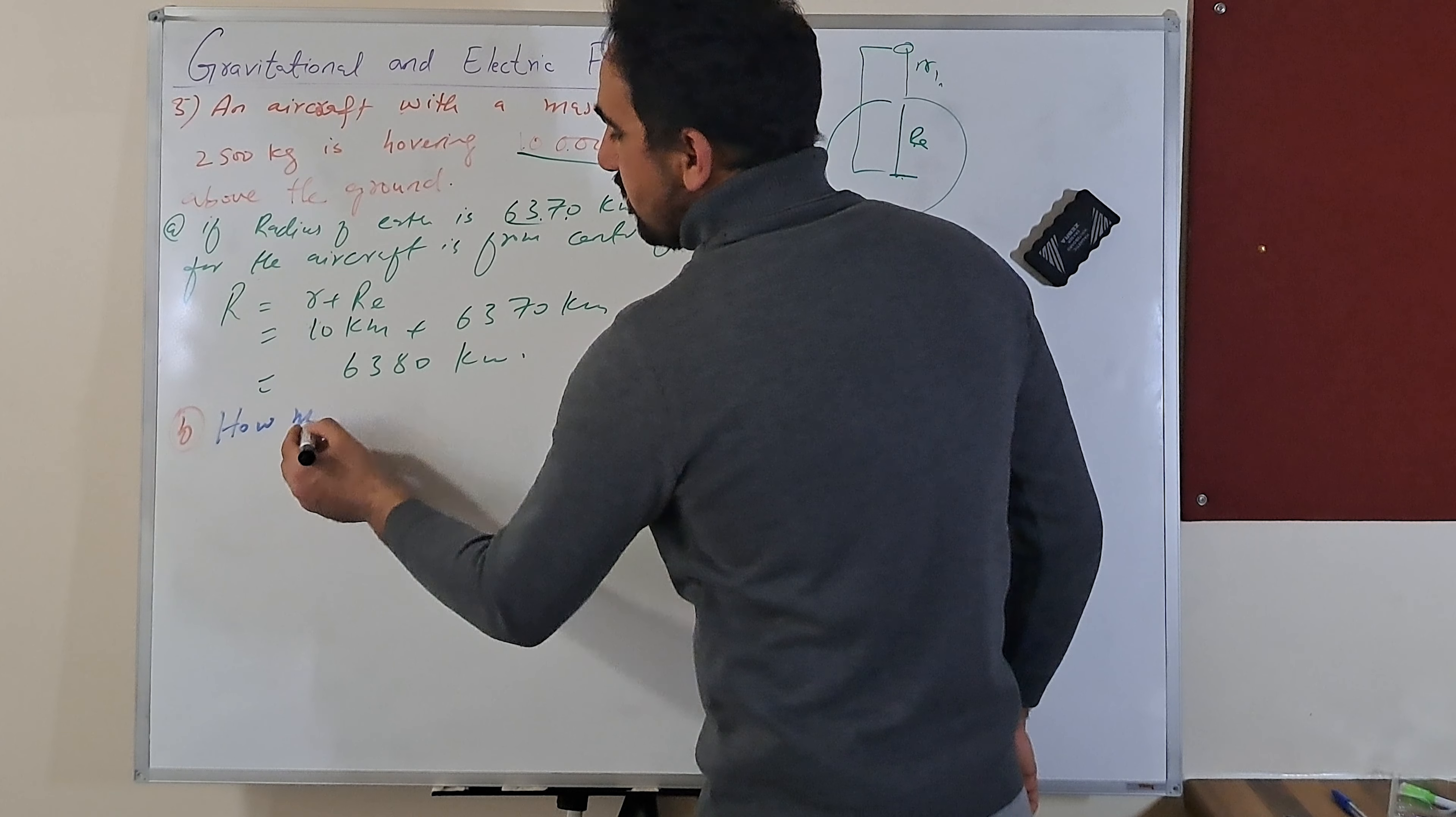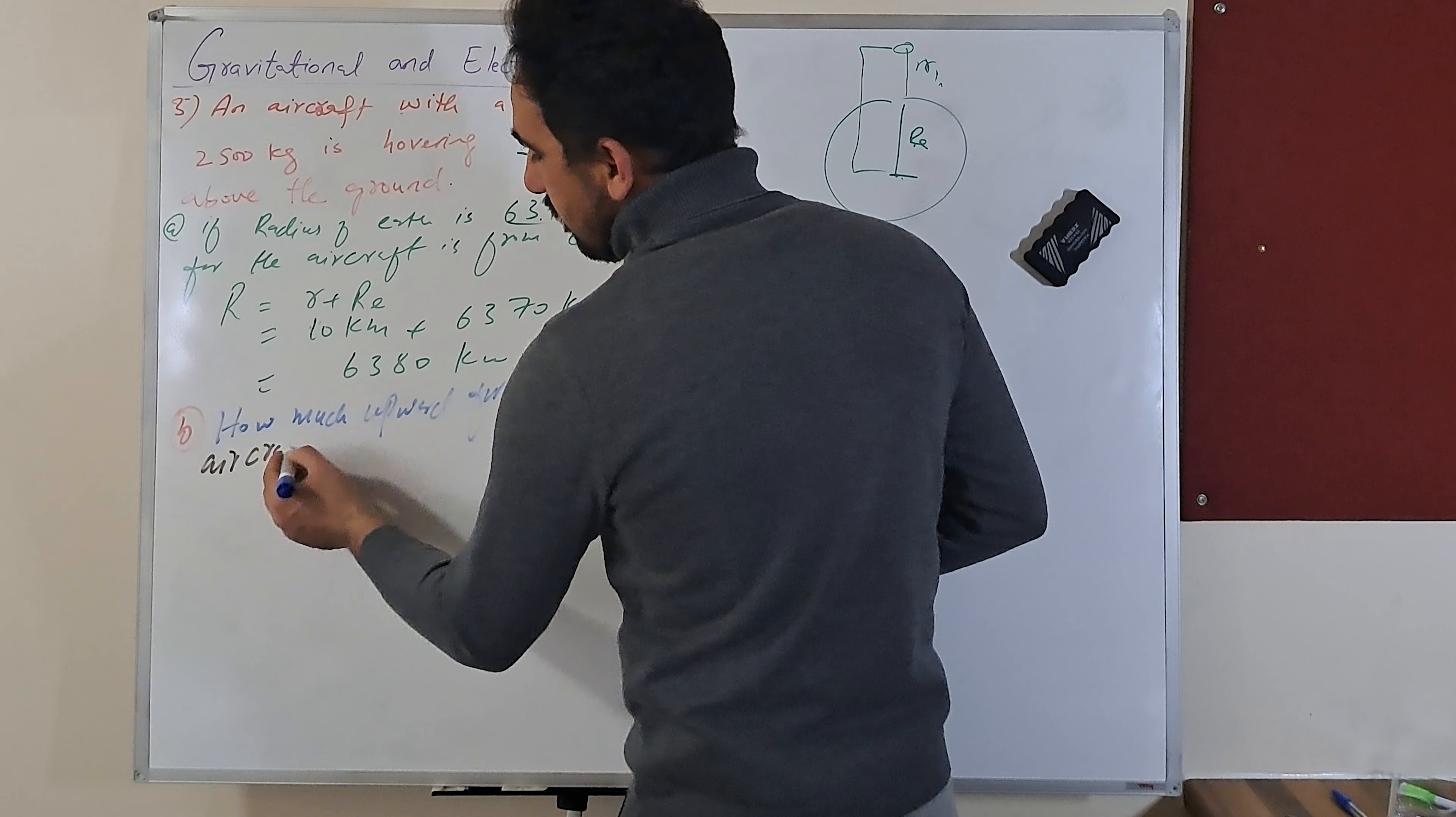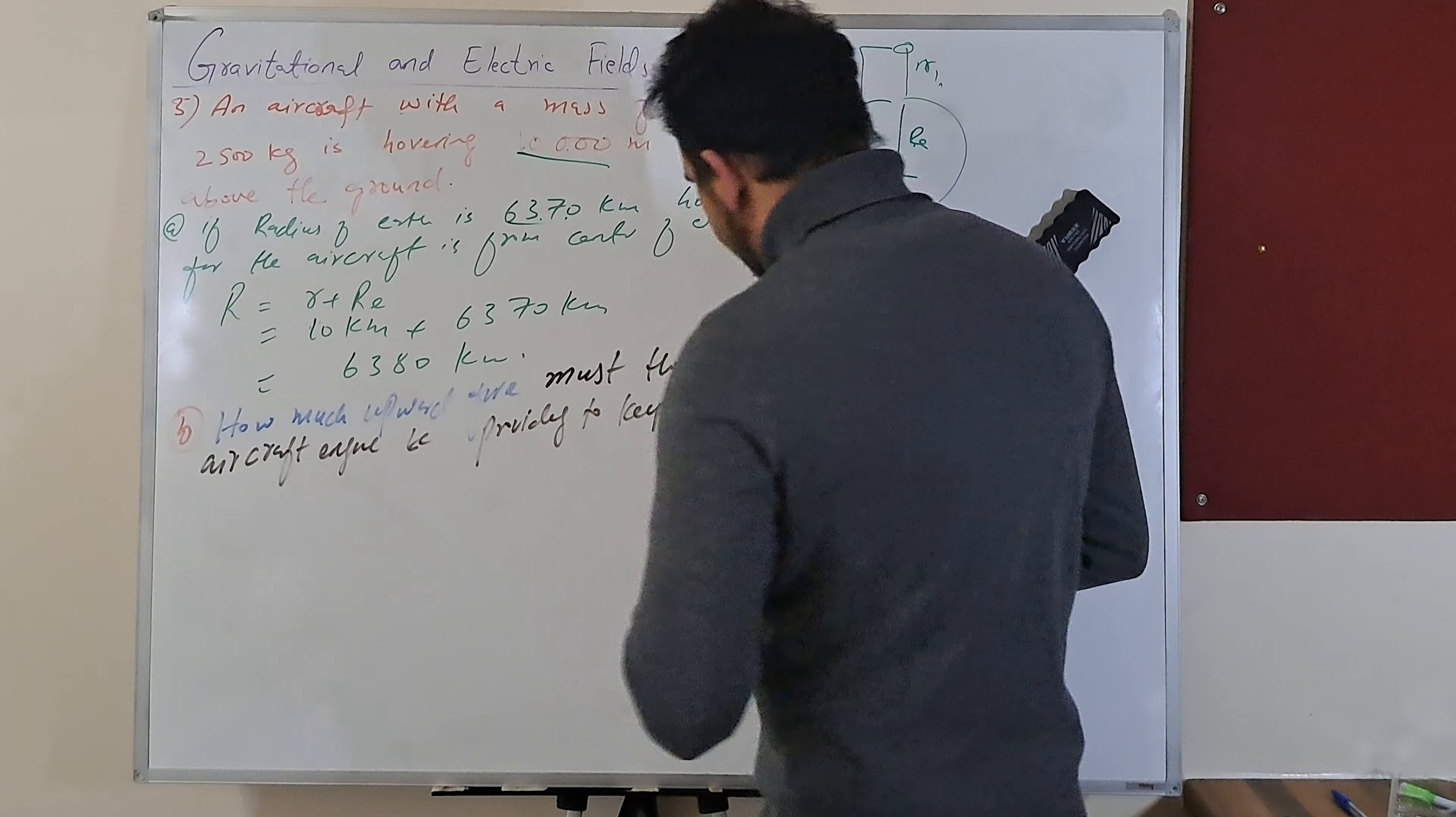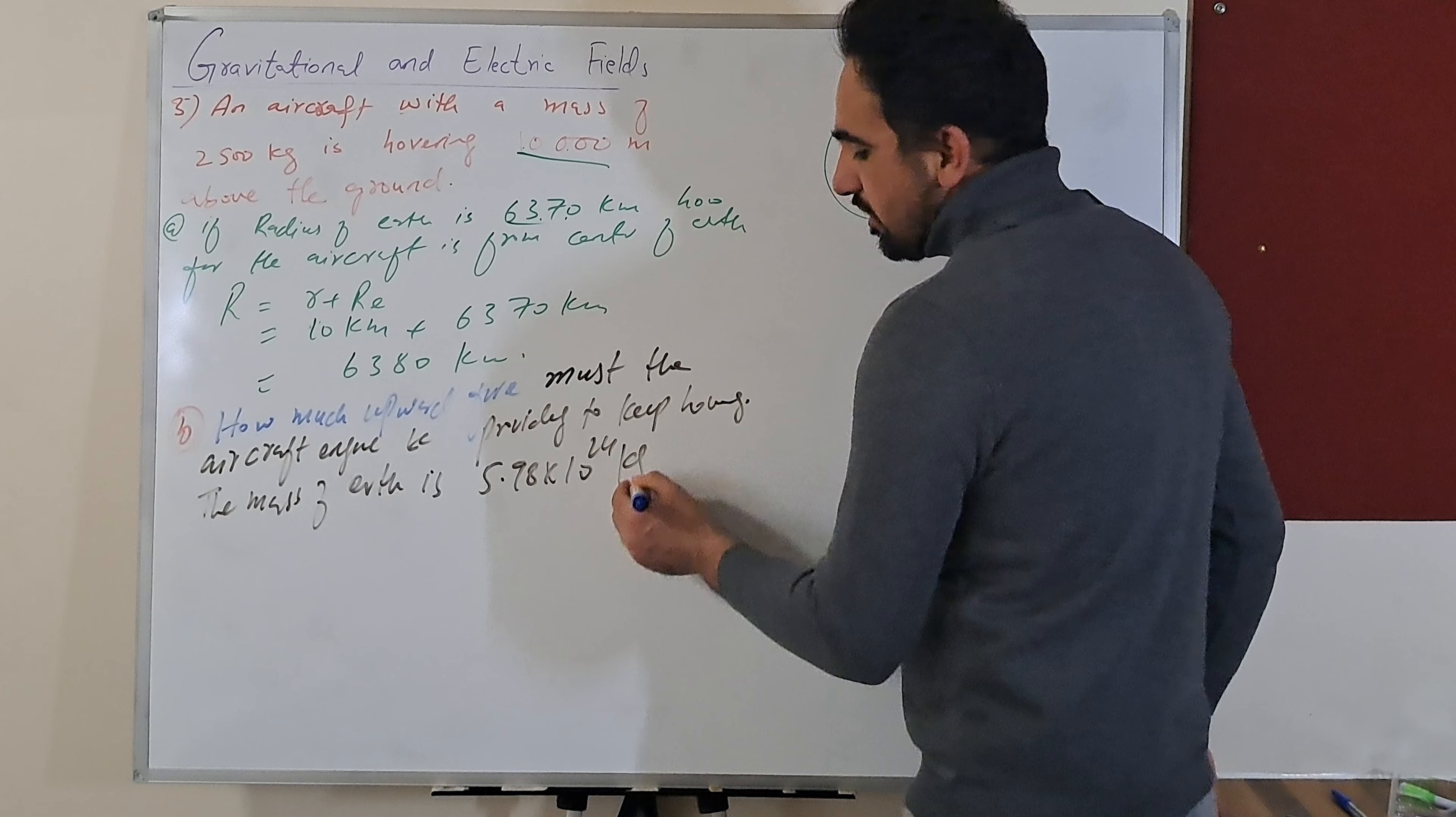Part B: How much upward force must the aircraft engine be providing to keep hovering? That's the question, and the mass of Earth is given. It's a constant you can remember: mass of Earth is 5.98 times 10 to the power 24 kilograms.